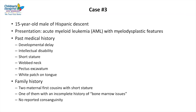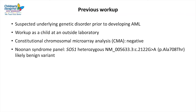The third case is a 15-year-old male of Hispanic descent who presented with AML with myelodysplastic features. His past medical history included developmental delay, intellectual disability, short stature, webbed neck, pectus excavatum, and a white patch on the tongue. He has two maternal first cousins with short stature, one with an incomplete history of bone marrow issues, and no reported consanguinity. There was a strong suspicion for an underlying genetic disorder prior to developing AML; previous genetic workup included a constitutional chromosomal microarray analysis and a Noonan syndrome panel, both of which were non-diagnostic.